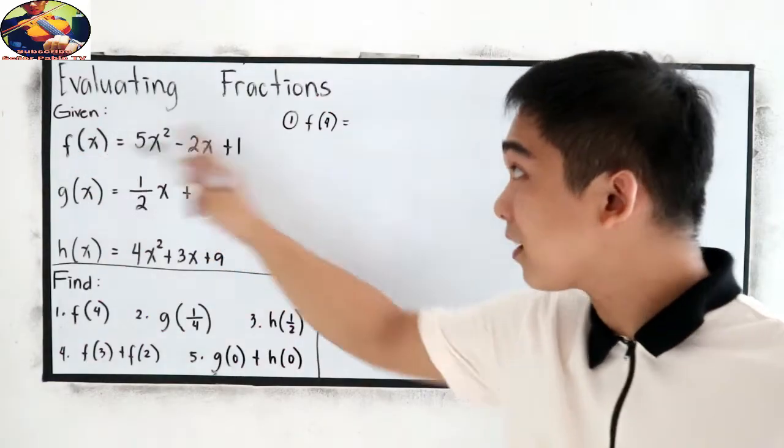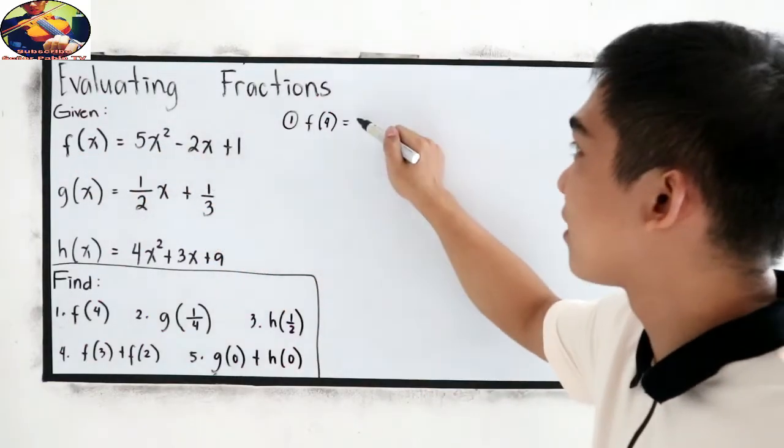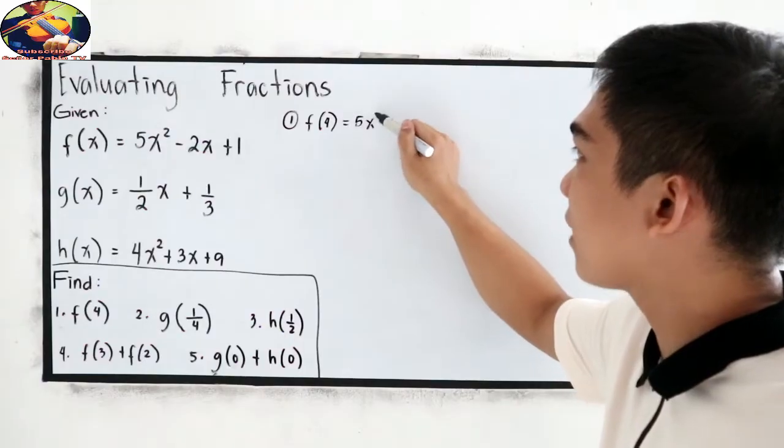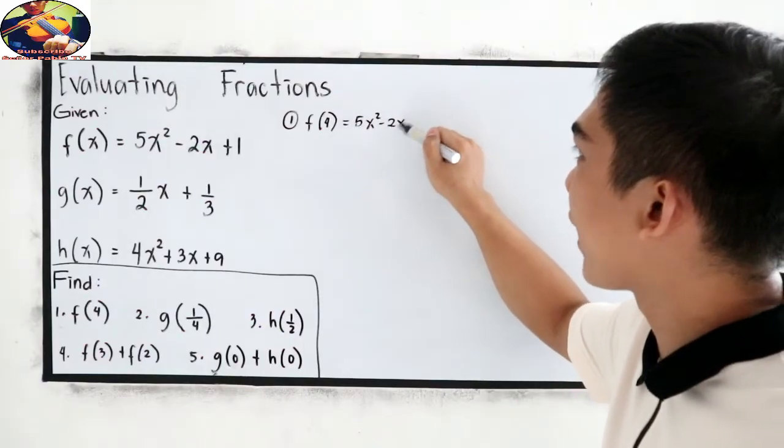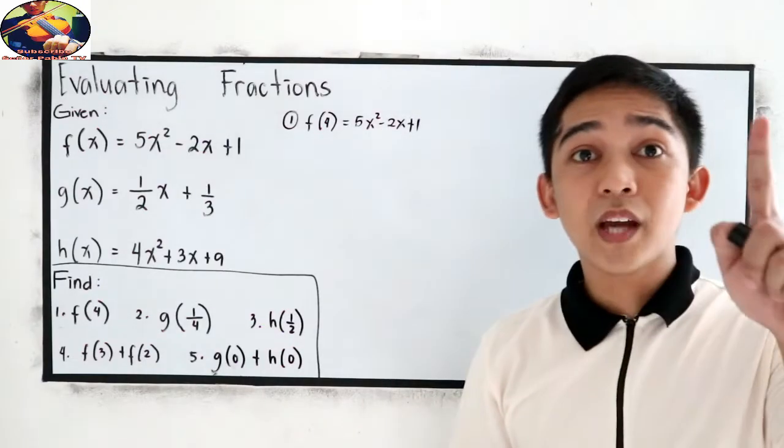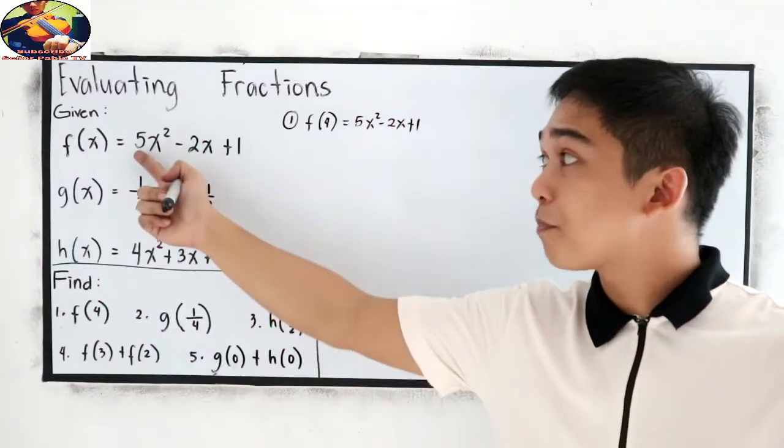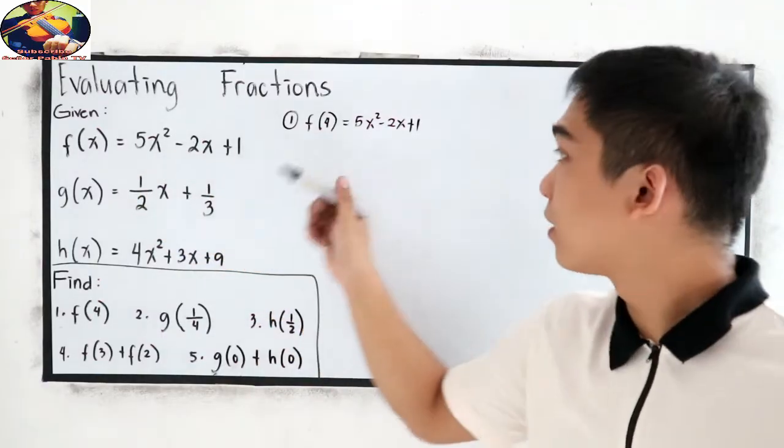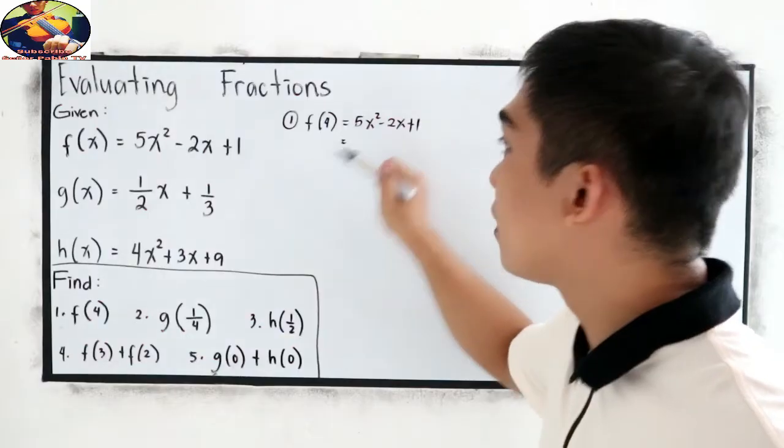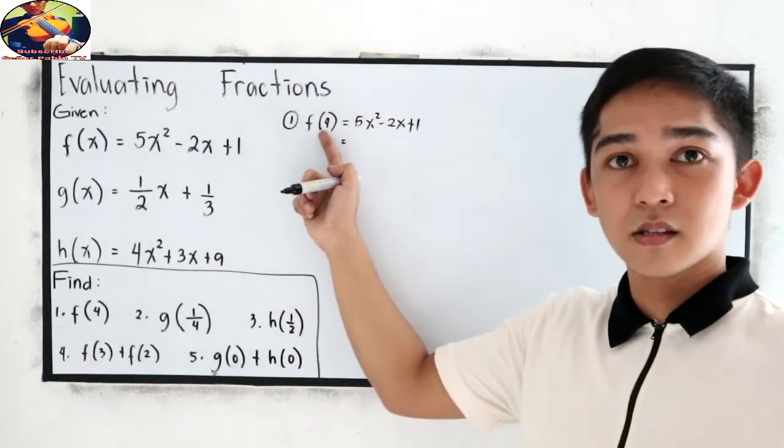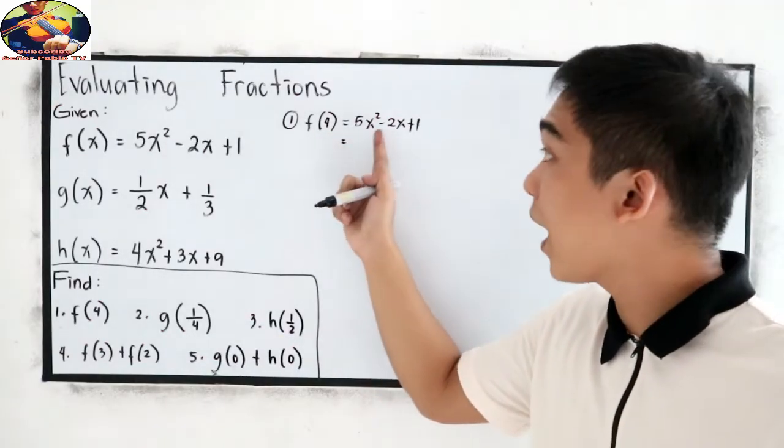Copy the function f(x). So, that is 5x squared minus 2x plus 1. That would be our first technique. Copy our expression. Then after copying, substitute the value of x.